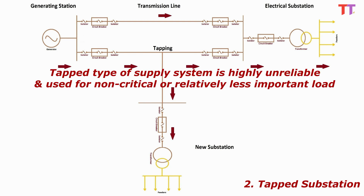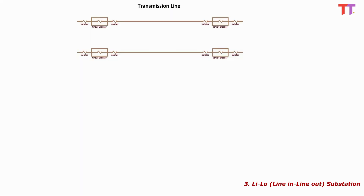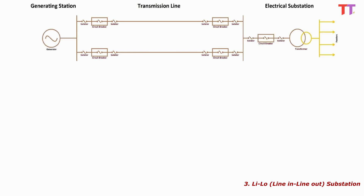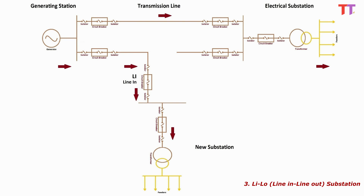Hence such a system is highly unreliable and used for non-critical or relatively less important load. 3. LILO means line in, line out substation. In this type of layout, as the name says, a line is brought in and taken out of the substation. Consider an existing power transmission line connecting two substations, transmitting power in this direction. A new substation is constructed nearby the transmission line. A transmission line is then constructed and taken in as a power source for the new substation, and similarly a line is taken out to feed the old substation, completing the circuit.